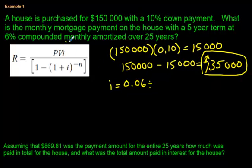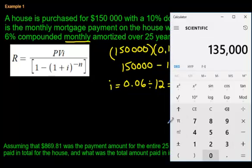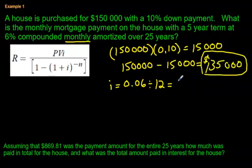It says it's compounded monthly. Monthly is the word. So it's 0.06 cut up into 12 chunks per year. 0.06 divided by 12, 0.06 divided by 12, 0.005. So that is I.